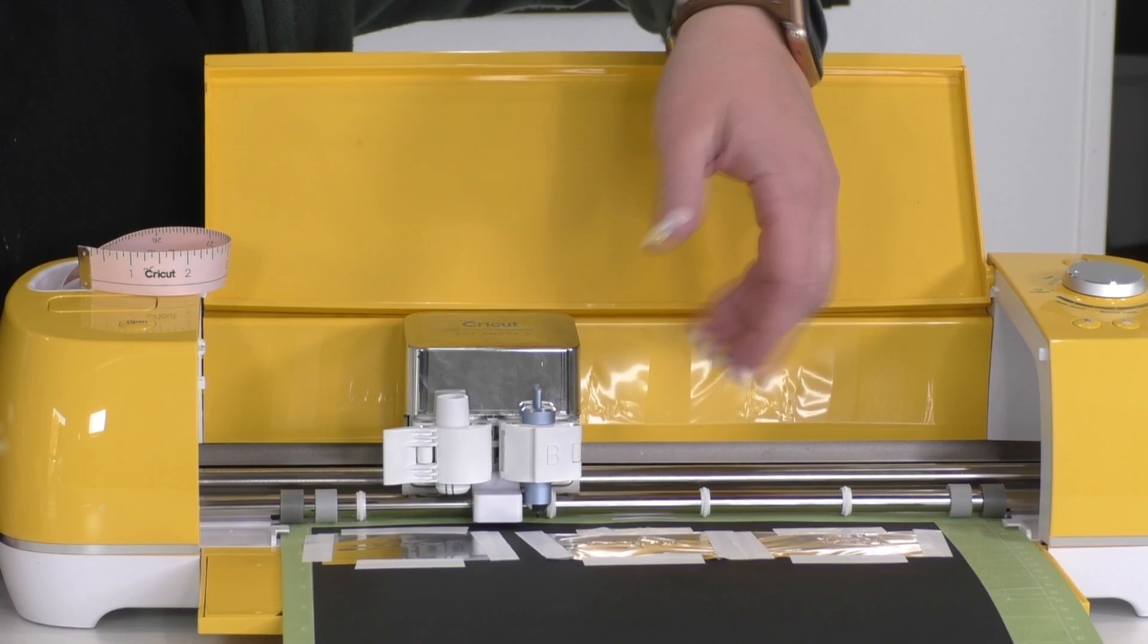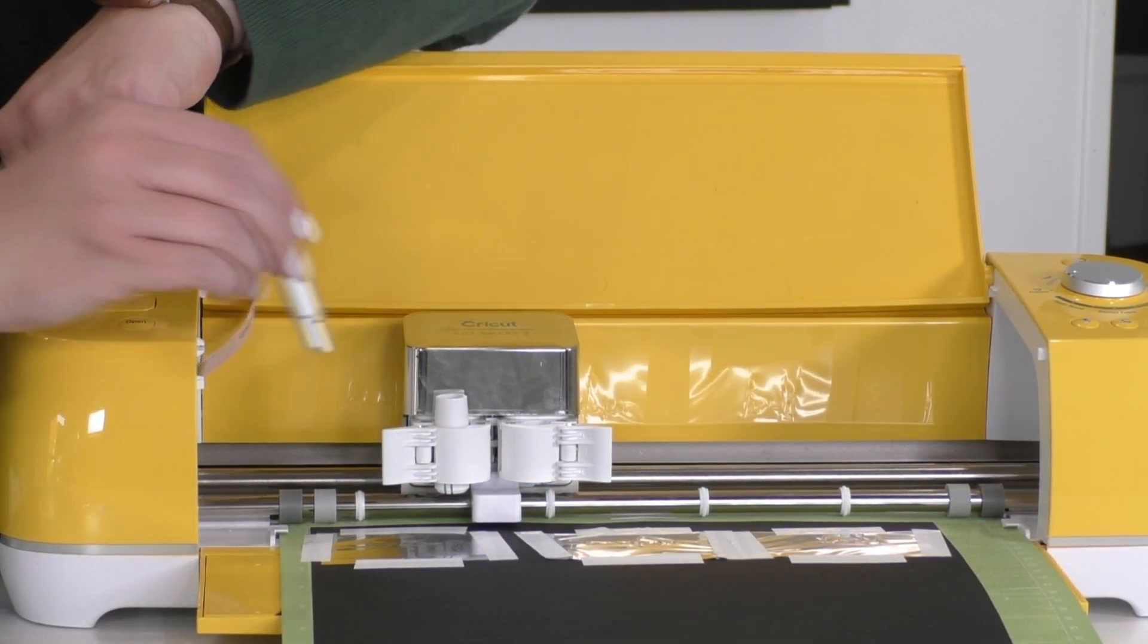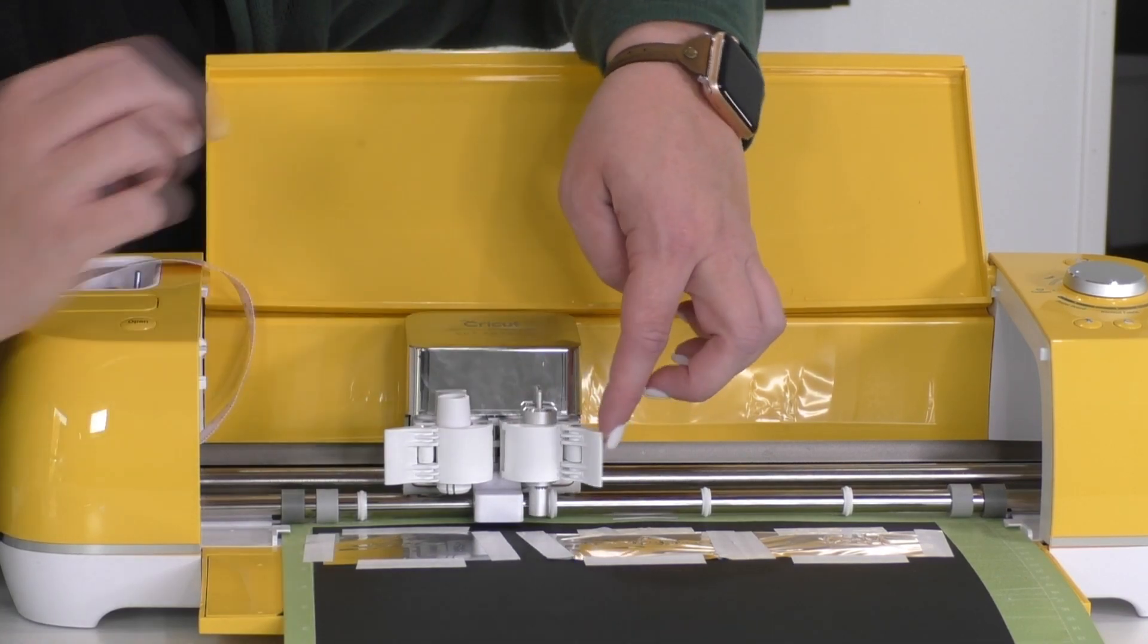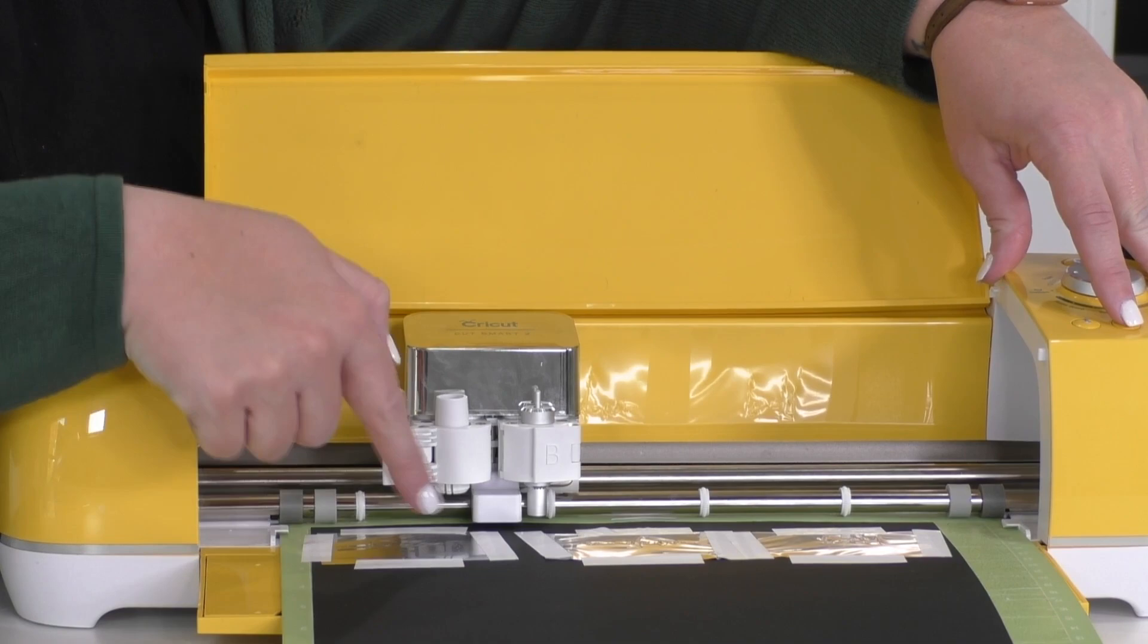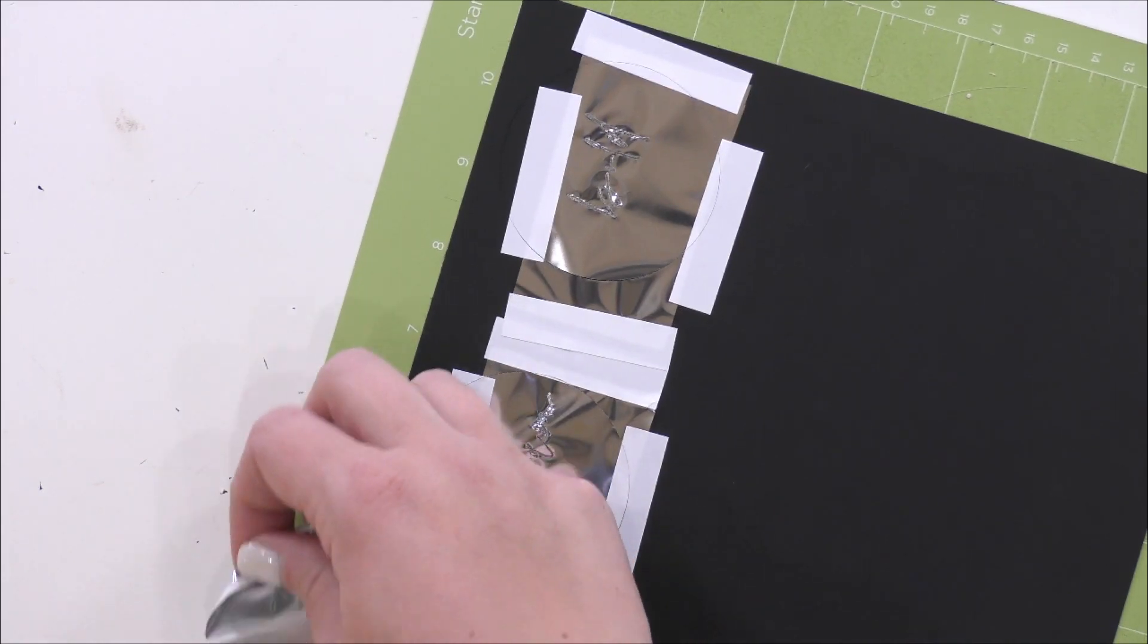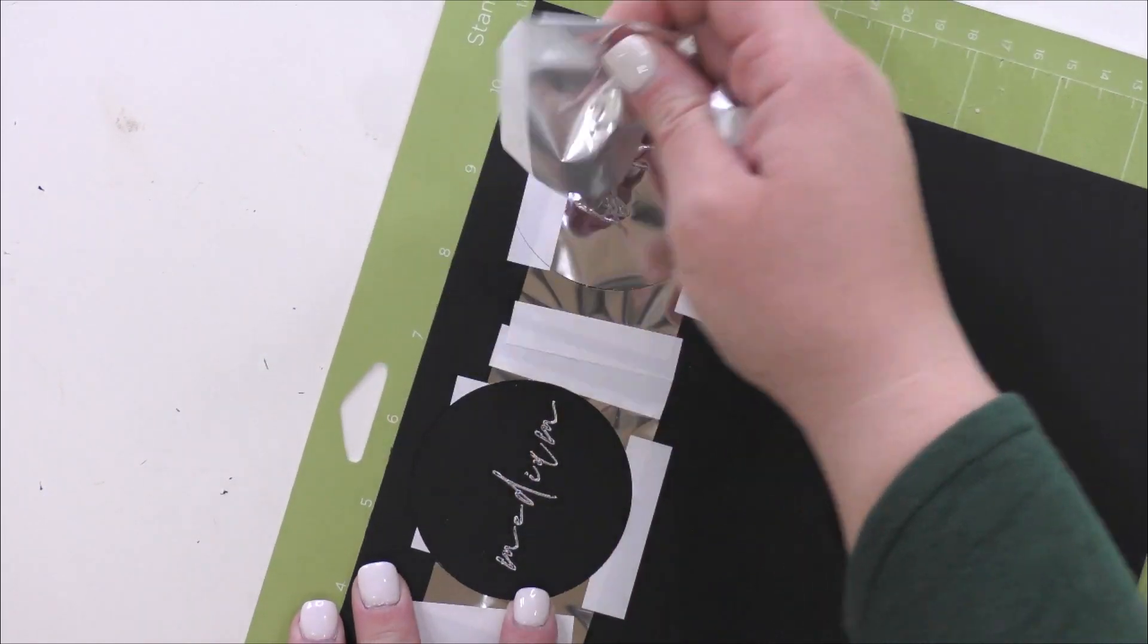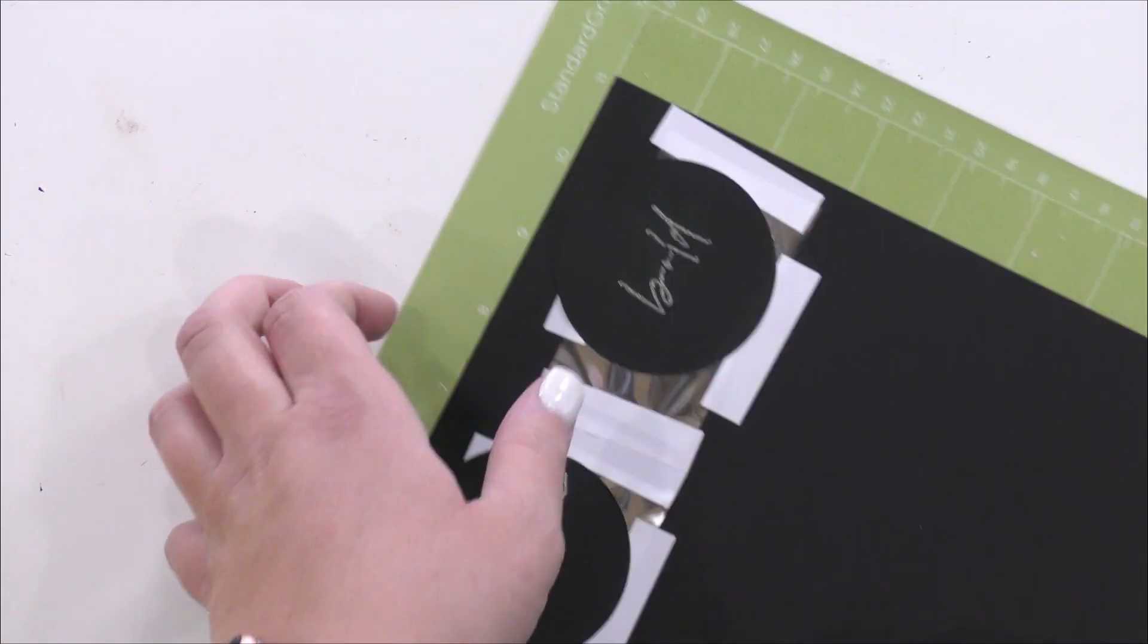Okay. We are finished with the foil transfer tool, and now we are ready to put our fine point blade back in our machine, close that clamp, press the flashing Cricut button so that our circles can be cut out. Okay. Now we can go ahead and remove our foil here. Just pull that up and then we can remove the mat from our card stock.